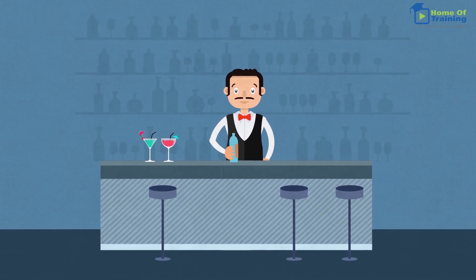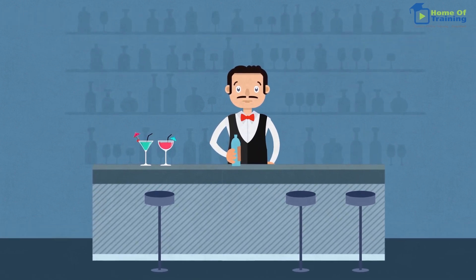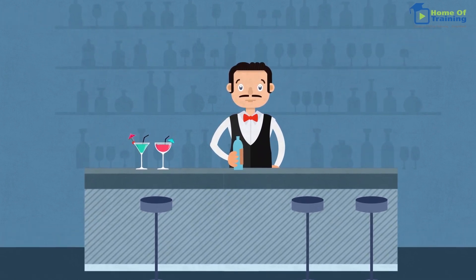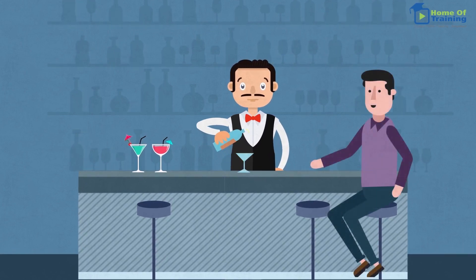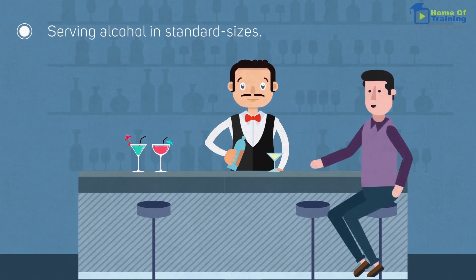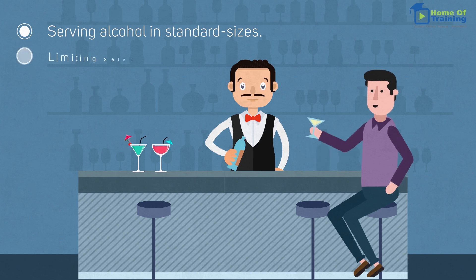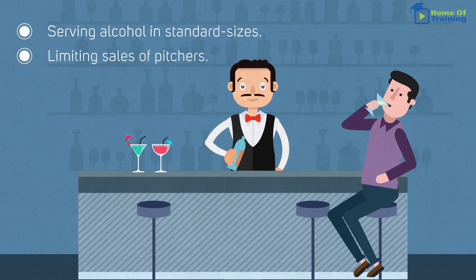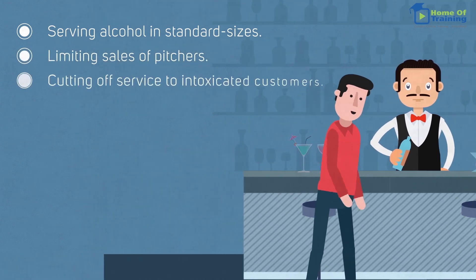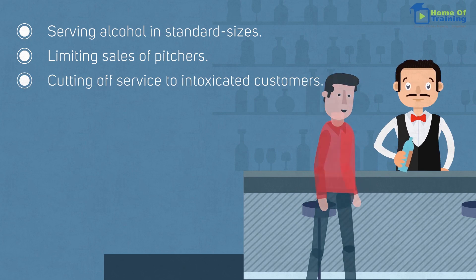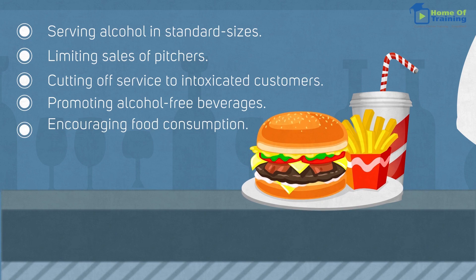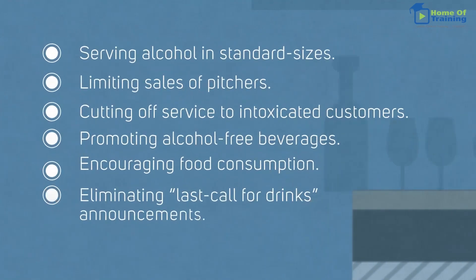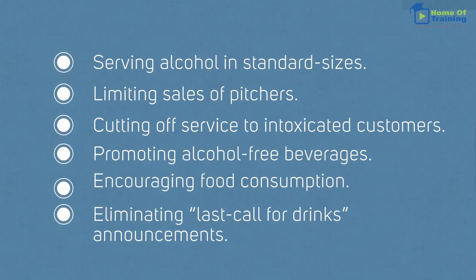Recent research findings point toward a number of different techniques that you can implement to further your objective of serving responsibly. They include serving alcohol in standard sizes, limiting sales of pitchers, cutting off service to intoxicated customers, promoting alcohol-free beverages, encouraging food consumption, and eliminating last call for drinks announcements.